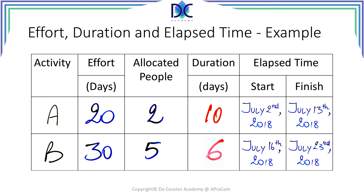The same applies for activity B, which has a 30-day effort. With 5 people, it gives a duration of 6 days. Starting Monday, July 16th, the activity will finish on July 23rd, which is again a Monday — 8 days on the calendar instead of a duration of 6.